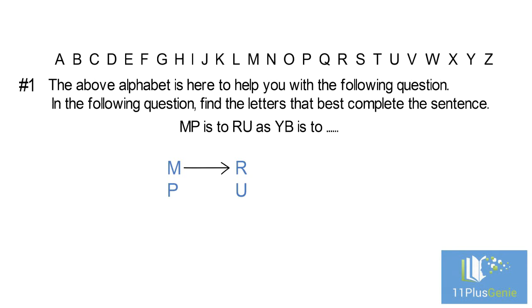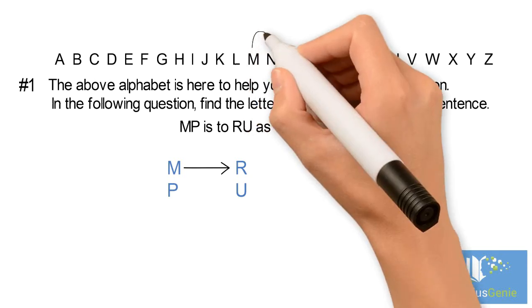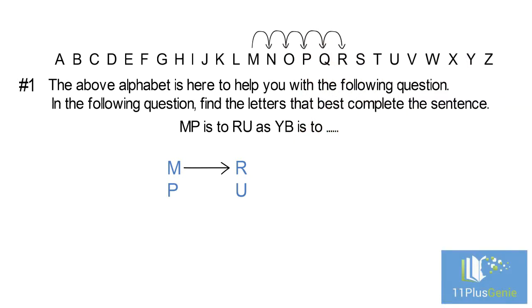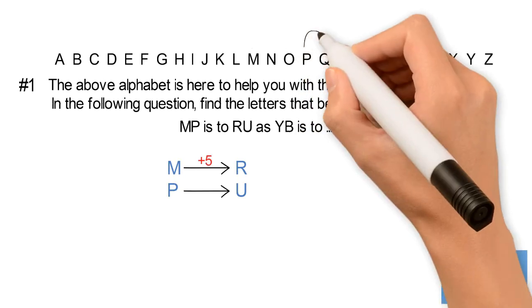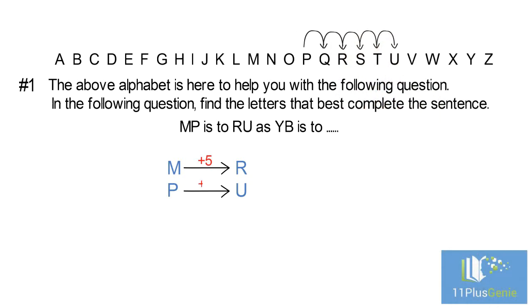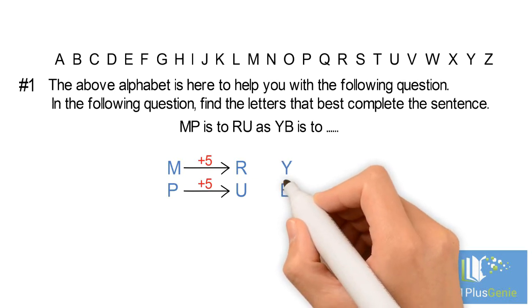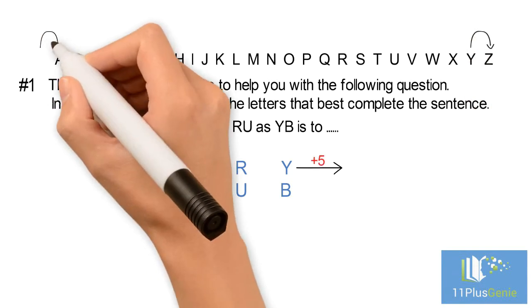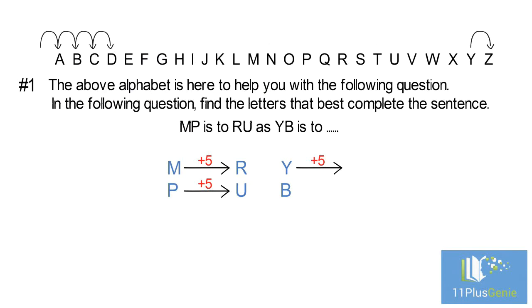From M to R, we move forward in the alphabet five places. So from M to R is plus 5. From P to U, we move forward in the alphabet five places. So again, plus 5. To find our answer, we must start at Y and move forward five places, which takes us to D.